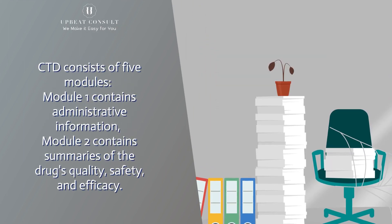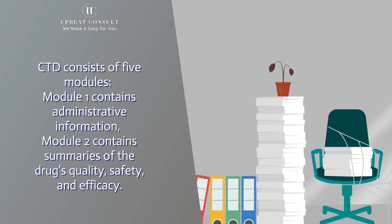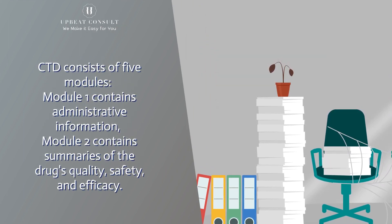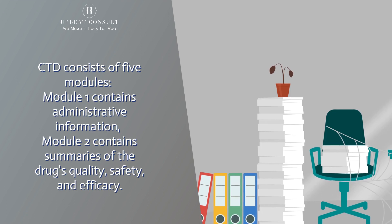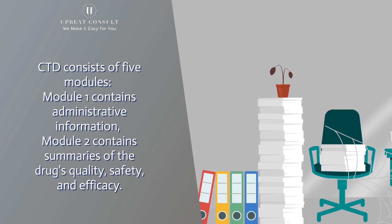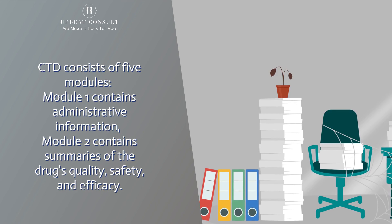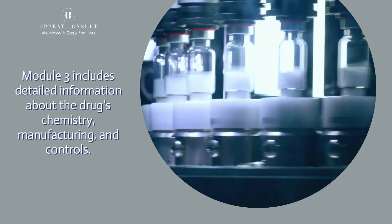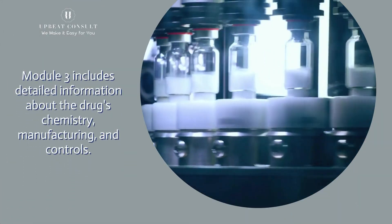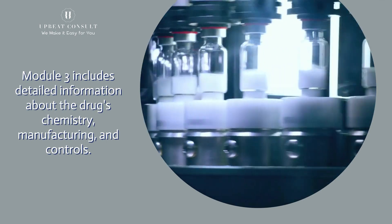CTD consists of five modules. Module 1 contains administrative information. Module 2 contains summaries of the drug's quality, safety, and efficacy. Module 3 includes detailed information about the drug's chemistry, manufacturing, and controls.